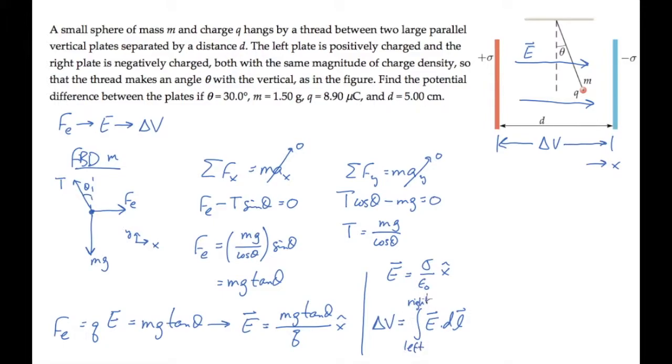The electric field magnitude is constant, so this just gives us the magnitude of E times the distance d between the two plates. When you substitute the values we're given in the problem statement and calculate, you find that delta V equals 47.7 volts.